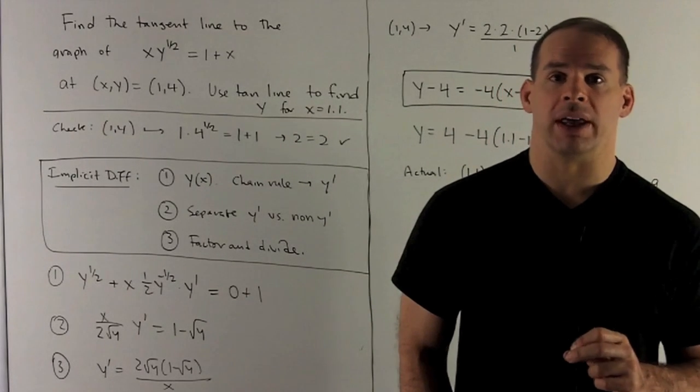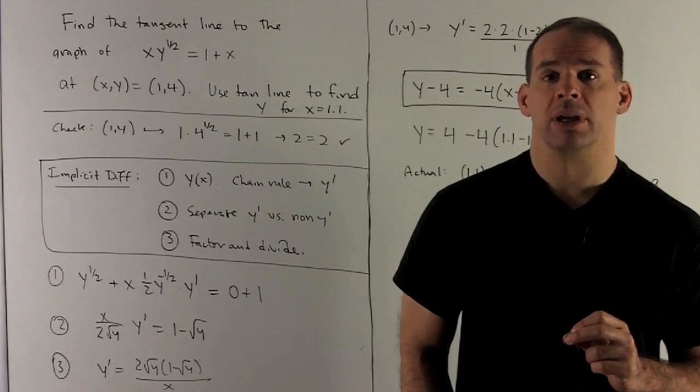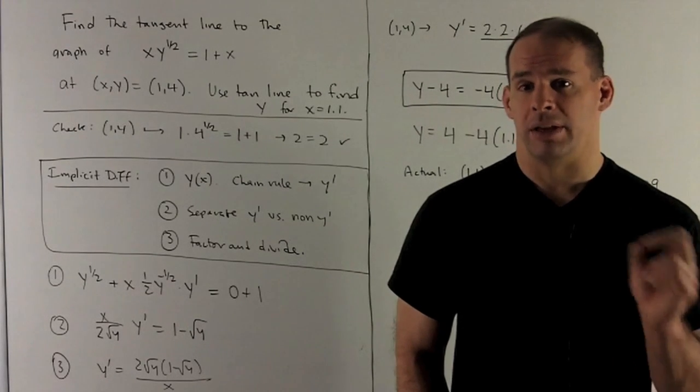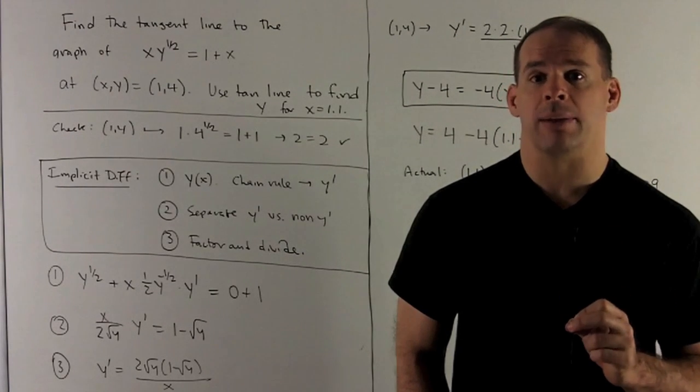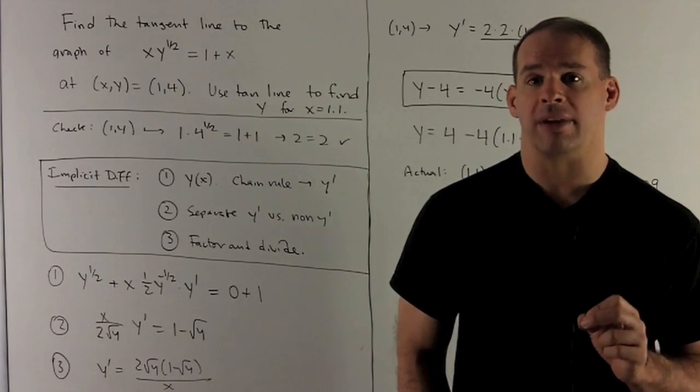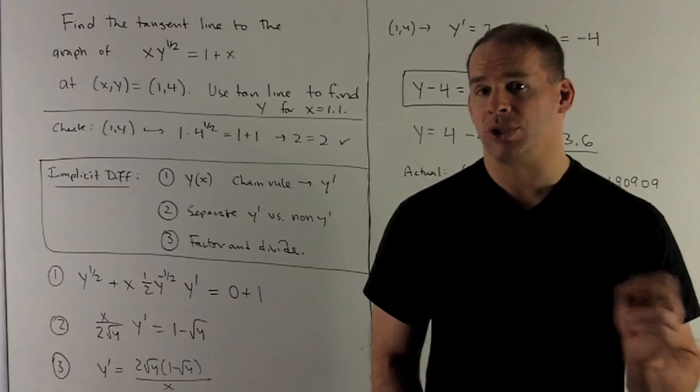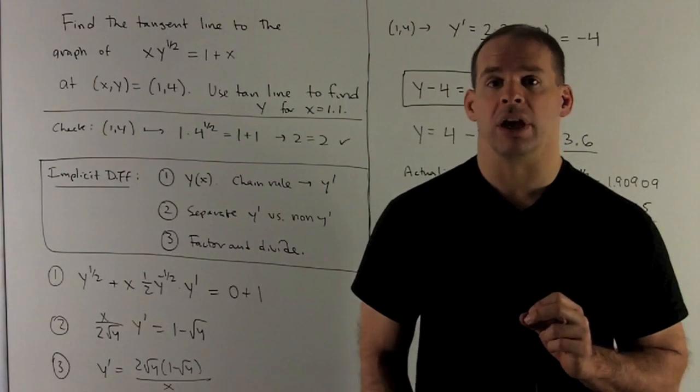First thing I should do is check that my point satisfies the equation. So I put (1,4) in for x and y in the equation. We have 1 times 4^(1/2) = 1+1, or 2 = 2, so that's good to go.